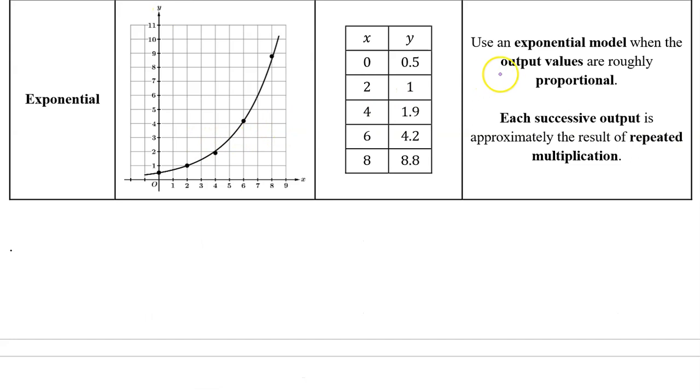We can tell that we need an exponential model when the output values are roughly proportional. We know that output values are proportional when successive values have a roughly constant ratio over equal length input value intervals. This means that each successive output is approximately the result of repeated multiplication.